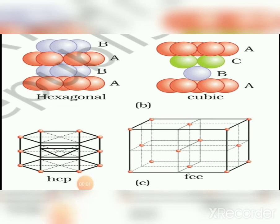In the second case, the third layer is placed so that it covers the octahedral voids. The spheres of the third layer are not aligned with either the first or the second layer. If the first layer is type A and the second is type B, the third layer is type C. This gives an ABCABC type arrangement, and the structure obtained is called the cubic close-packed structure, CCP, or face-centered cubic structure, FCC.